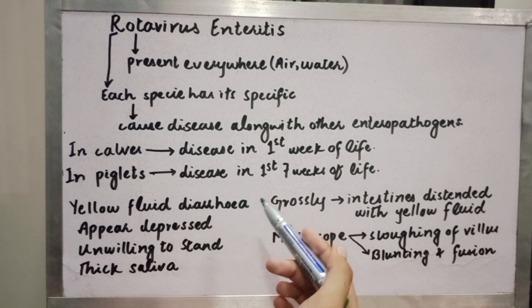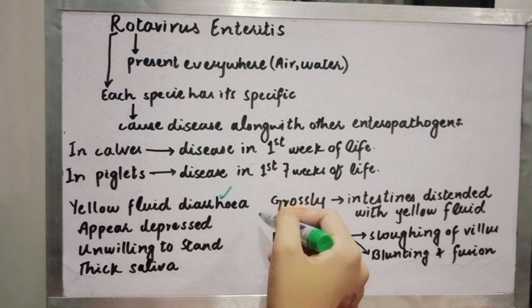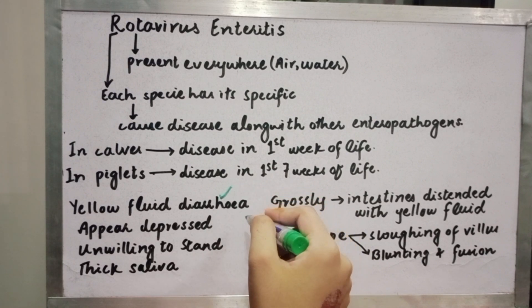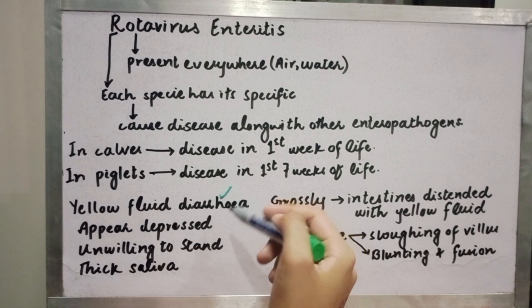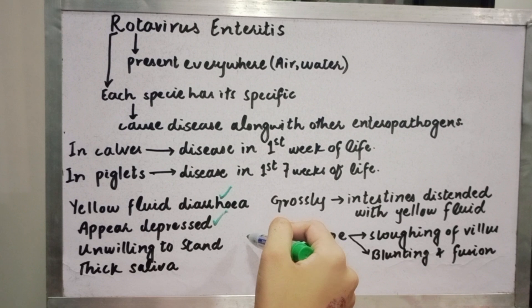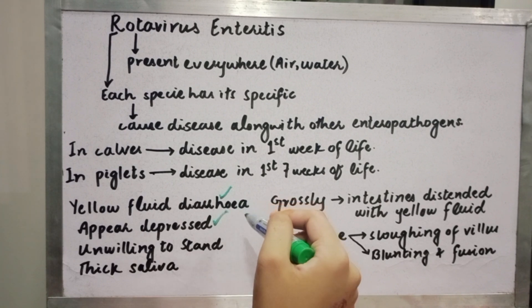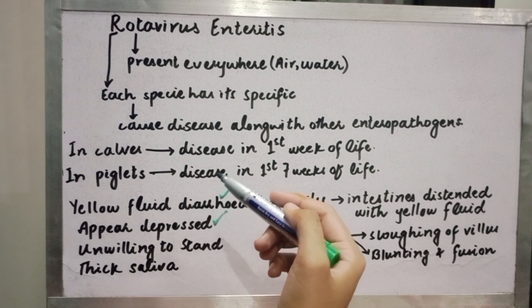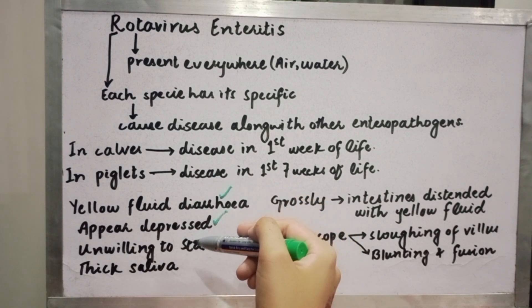Affected animals will show yellow fluid diarrhea. There is yellow color diarrhea and yellow fluid. Animals appear depressed, are not prepared for movement, unwilling to stand, move, eat, or drink. There may be thick strings of sliver hanging from their lips.